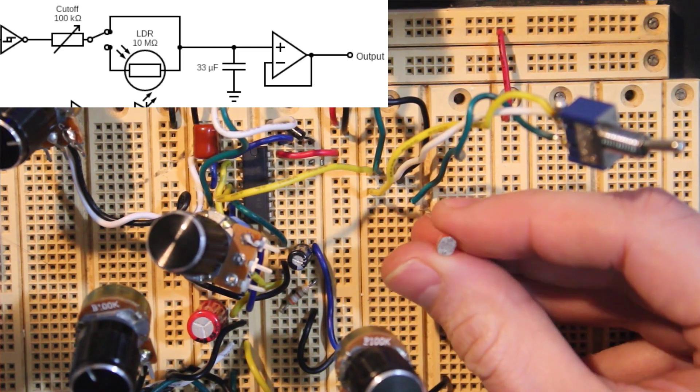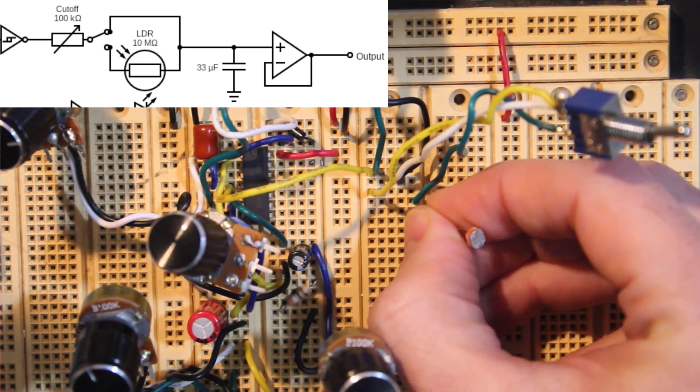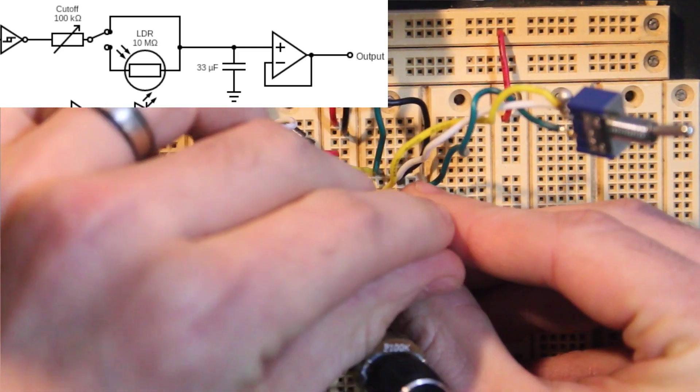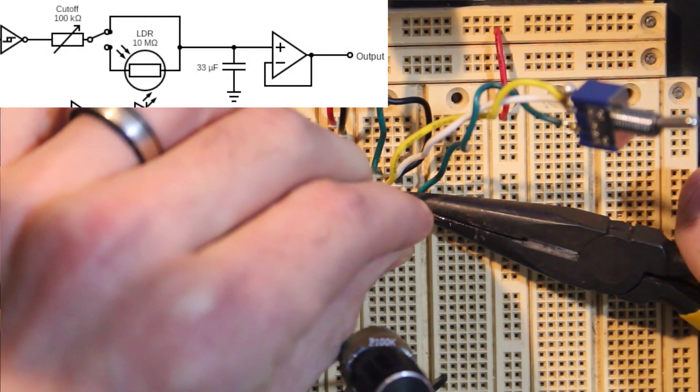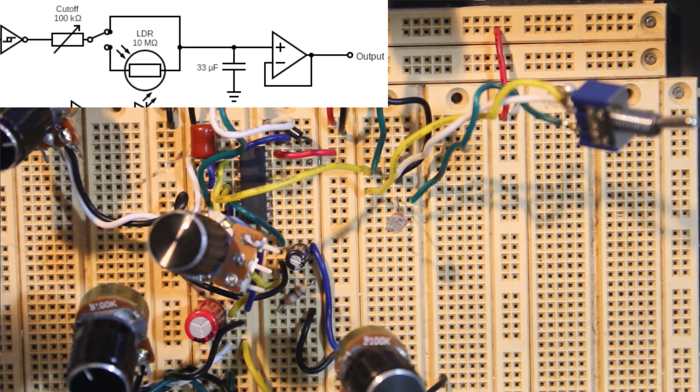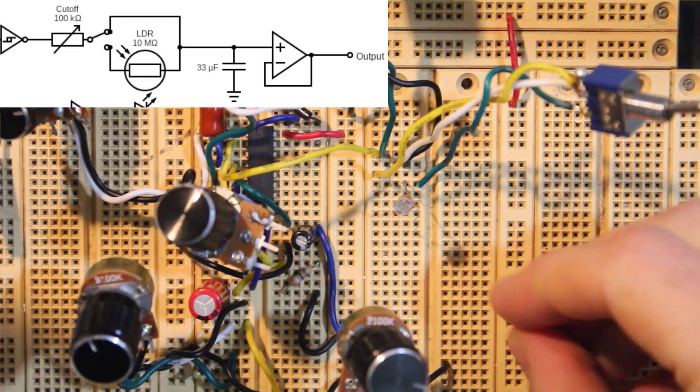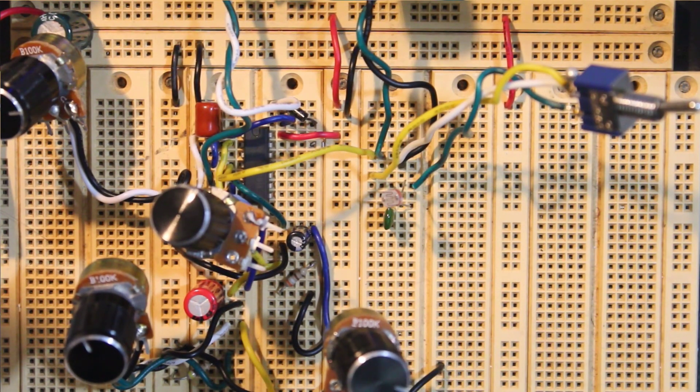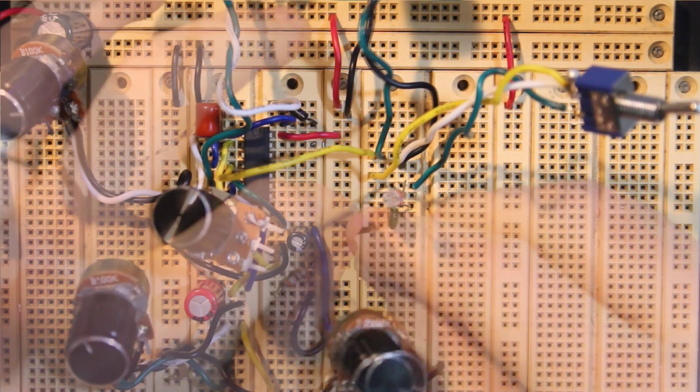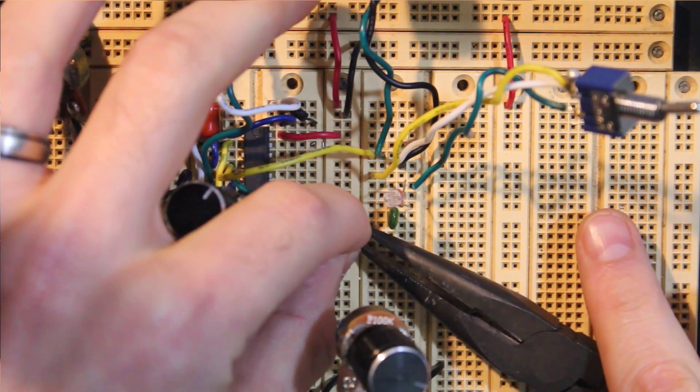Add one leg of the light-dependent resistor to one rail. Adding in the capacitor for our filter to the other leg, and the remaining leg of the capacitor to ground.